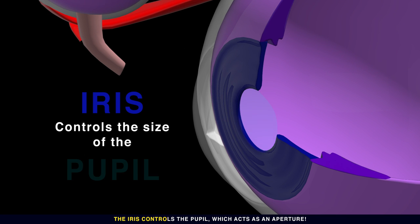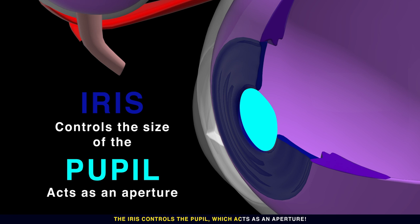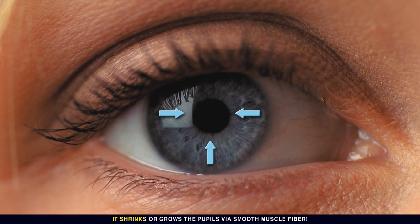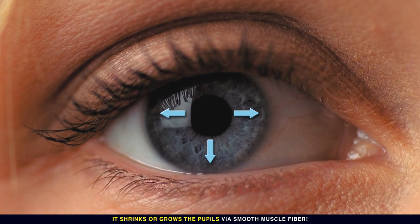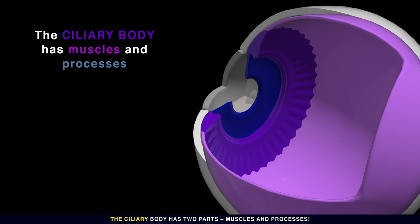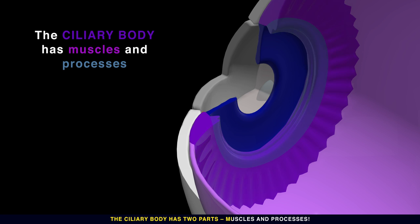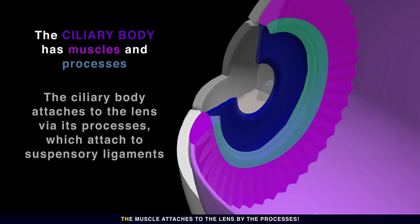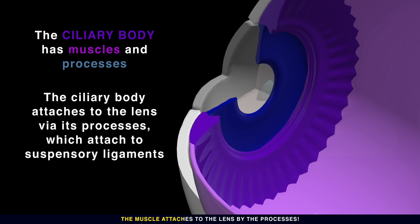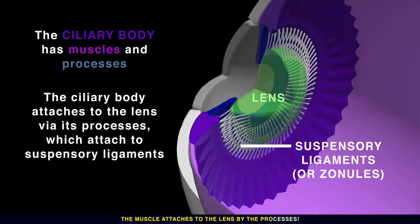The iris controls the pupil, which acts as an aperture. It shrinks or grows the pupil via smooth muscle fiber. The ciliary body has two parts: muscles and processes. The muscle attaches to the lens by the processes.